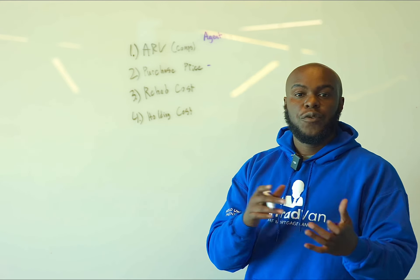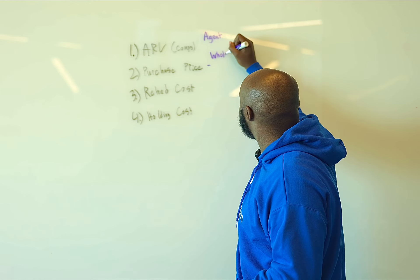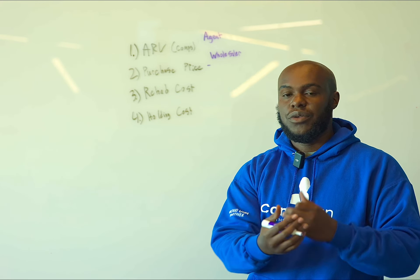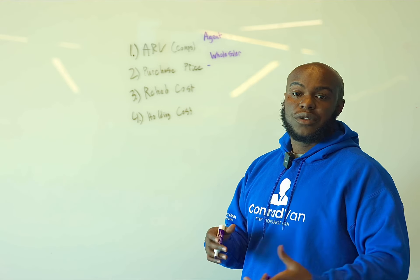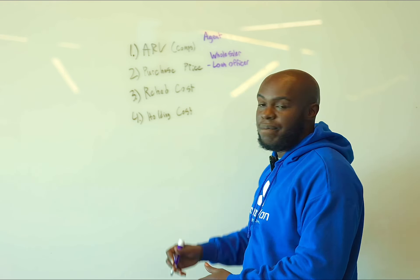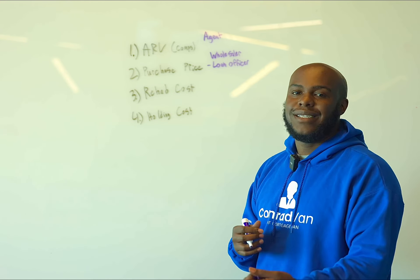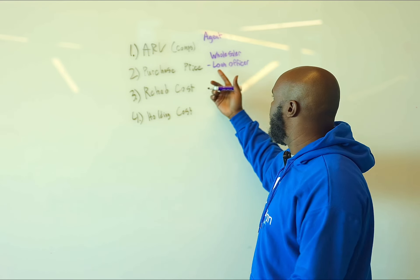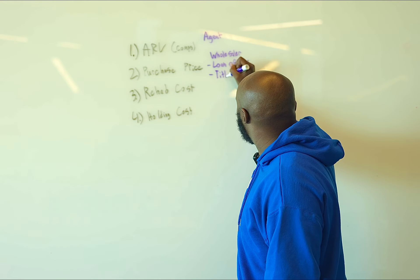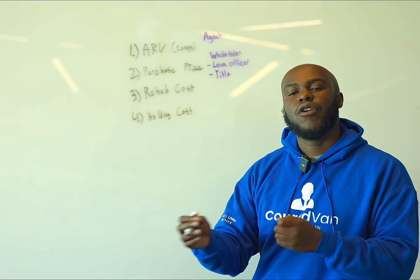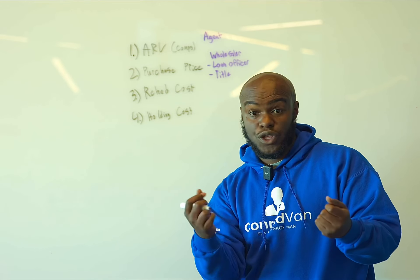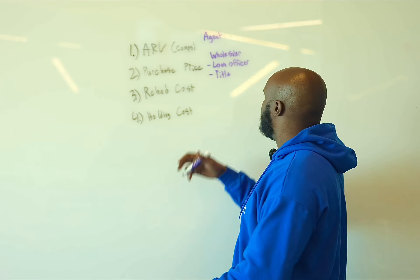Next is going to be your purchase price. There are a few people here. First, you're going to have a wholesaler — a wholesaler is someone who gets a property under contract, sells that contract to you, and moves out of the way. You also have your loan officers. What a loan officer does is they'll finance that deal, and they can give you the proof of funds to purchase the property. And then you'll also have title. Title verifies ownership interest and confirms there are no additional liens — they make sure the seller owns the property and that when you buy it, you're legitimately buying it.